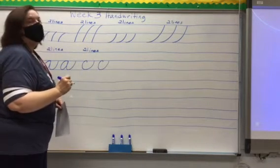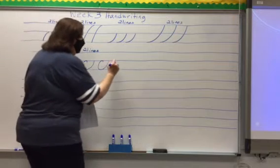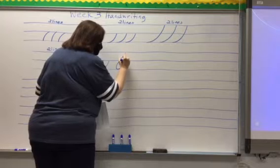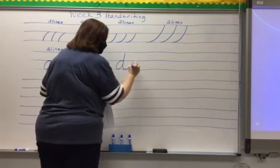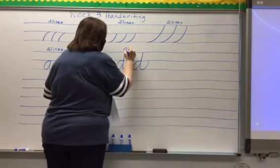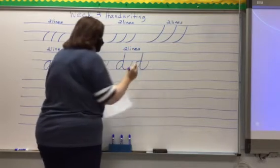A D is like an A. But when you come around you come all the way back up to the top line. Do a tall slant down short under. So this is a D. And you're going to do two lines of D.